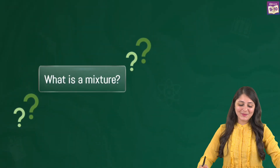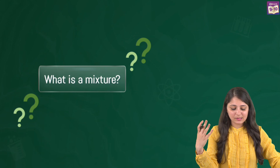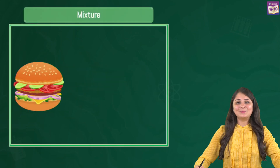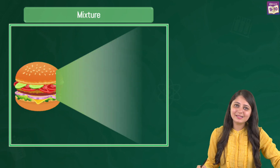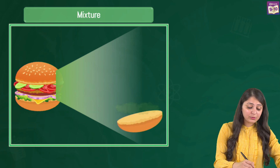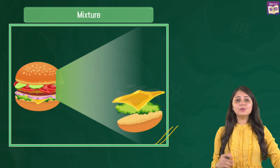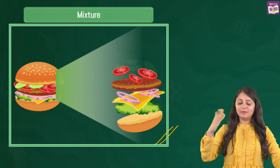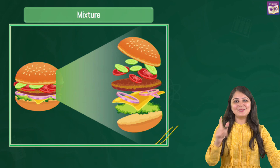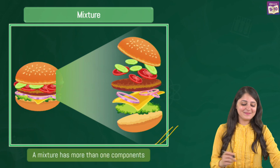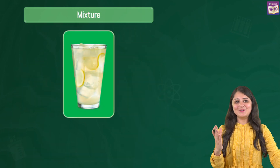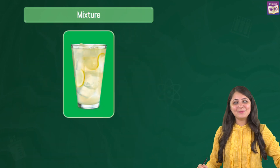So what exactly is a mixture? Let's take the case of your favorite burger to understand. A mixture actually contains two or more pure substances. You can see how beautifully all of them are being mixed together to make this delicious burger. So your burger is a mixture because it contains more than one component — burgers are mixtures, they are not pure substances.